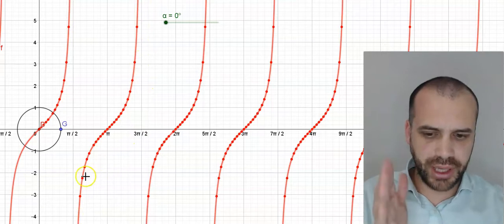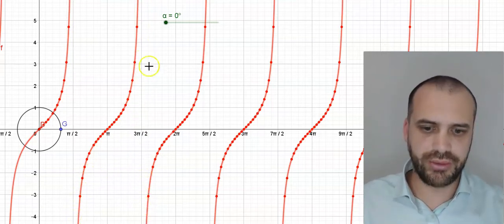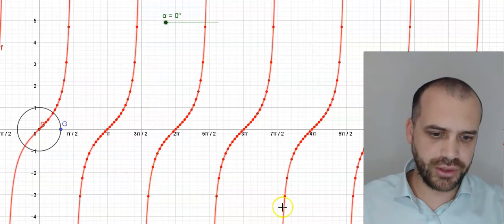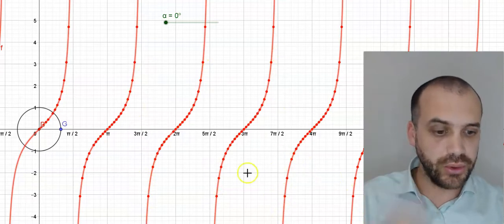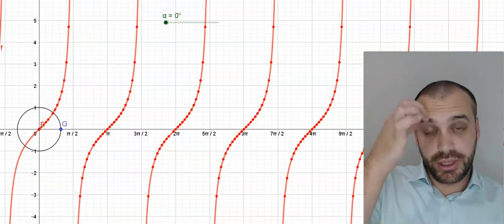And there's actually a bunch of asymptotes at pi on 2, at 3 pi on 2, at 5 pi on 2, at 7 pi on 2. All of those are asymptotes. So, why is it doing this?